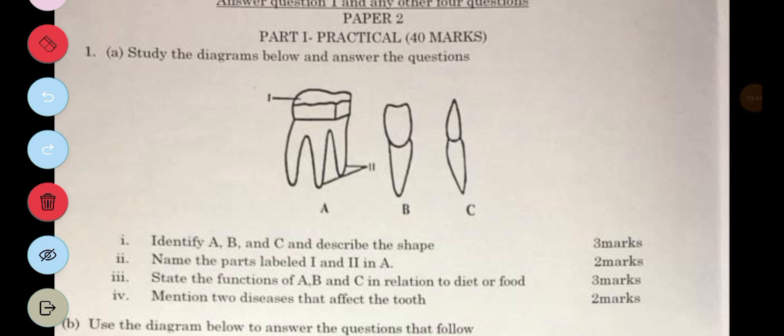So study the diagrams below and answer the questions that follow. So identify A, B and C. So A is a molar, B is incisor, C is canine. Then the next one says name the parts I and II in A. So I is the enamel, II is the root. III is state the functions of A, B and C. So the molar is used for grinding and chewing, the incisor which is B is used for cutting, then C is used for tearing or tearing flesh.